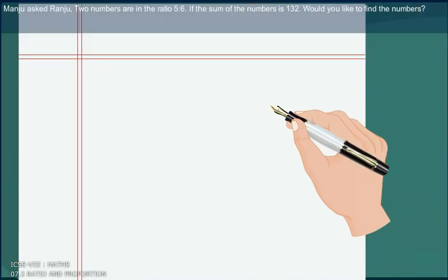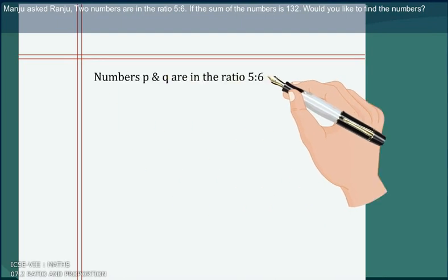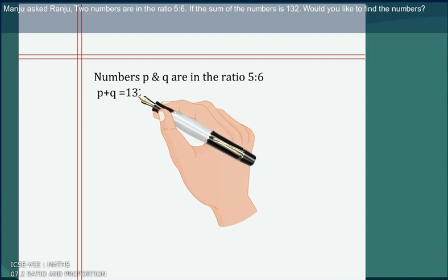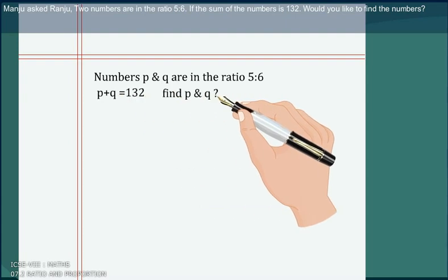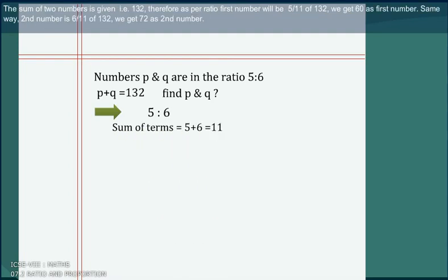Manju asked Ranju, 2 numbers are in the ratio 5 is to 6. If the sum of the number is 132, would you like to find the numbers? To find the numbers, first we need to find sum of the terms of ratio. We get sum of the terms 11. The sum of 2 numbers is given, that is 132.